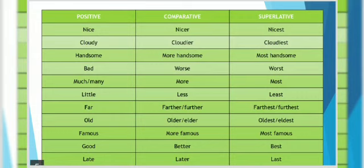Much or many, both have same comparative and superlative degrees. That is, more and most. The next adjective is little. Comparative degree is less. And the superlative is least.